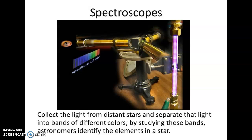Spectroscopes — you're somewhat familiar with these from when we talked about light waves. Spectroscopes collect light from distant stars and separate that light into bands of different colors. By studying these bands, astronomers can identify the elements that make up a star.